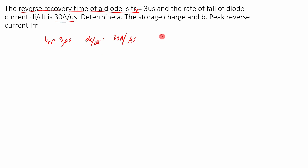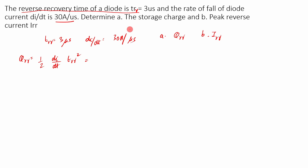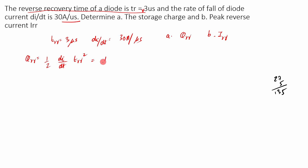What they are asking: (A) find the storage charge QRR, and (B) the peak reverse current IRR. These are direct applications of the formulas. We know QRR equals half times (di/dt) times TRR squared. The only tricky part is converting everything into SI units. So this is half times 30 amperes per microsecond times (3 microseconds) squared.